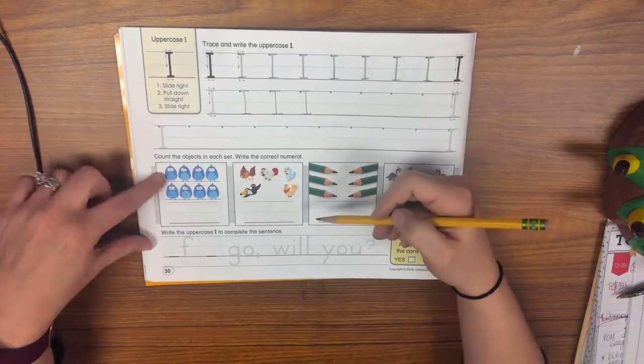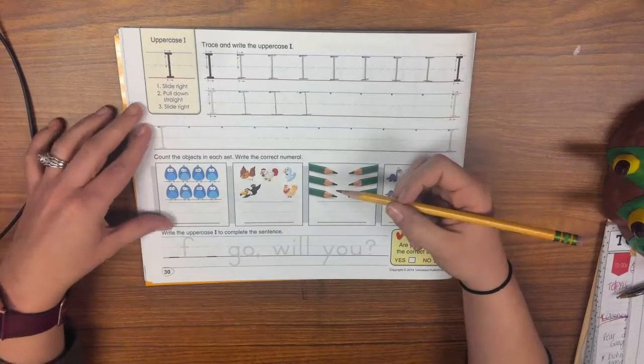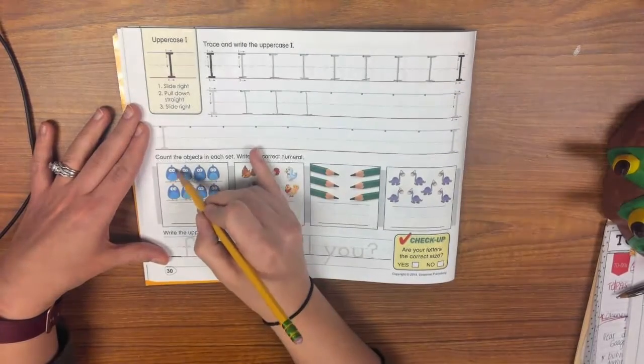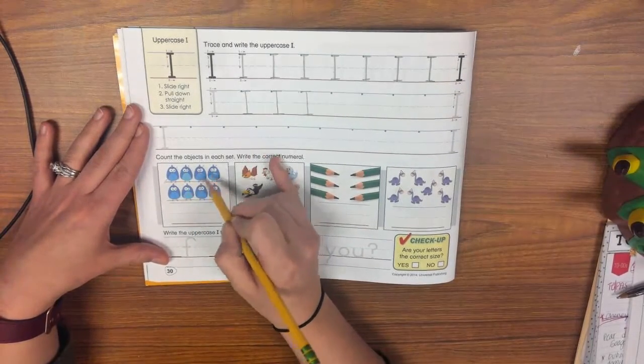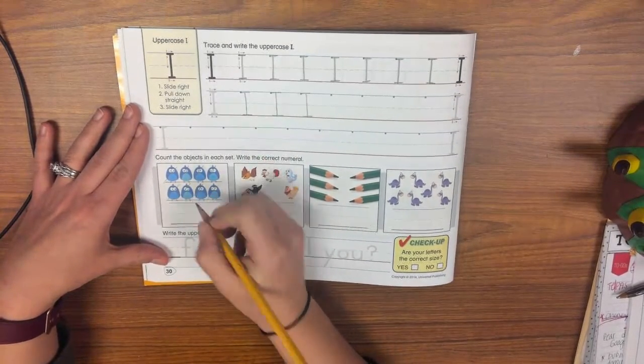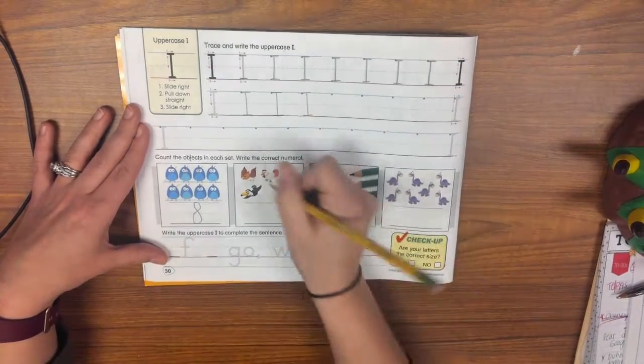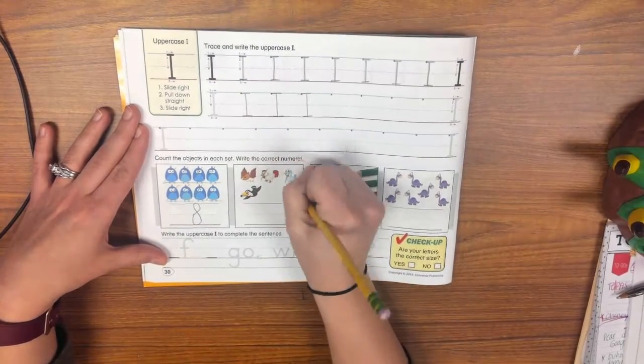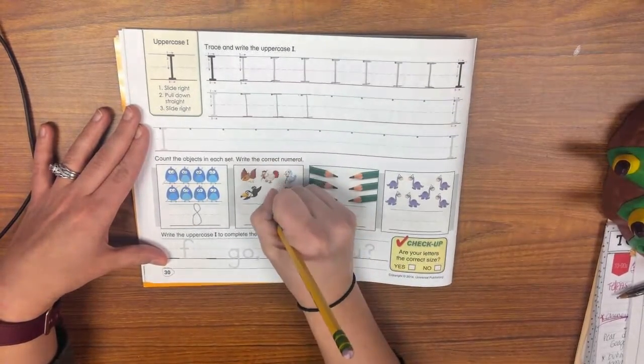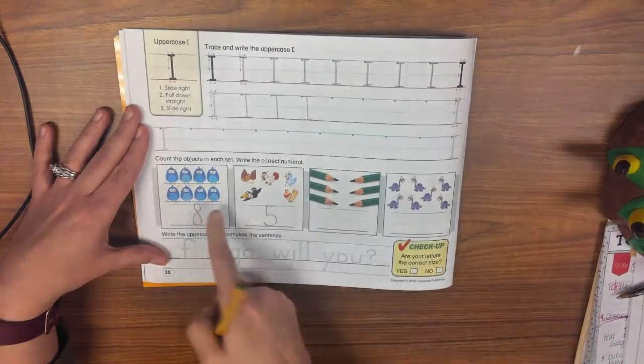Then you're going to come down here and it says count the objects in each set and write the correct numeral. So you're just going to count one, two, three, four, five, six, seven, eight, and then write the numeral that goes with that number. One, two, three, four, five. I'm going to do that for each set.